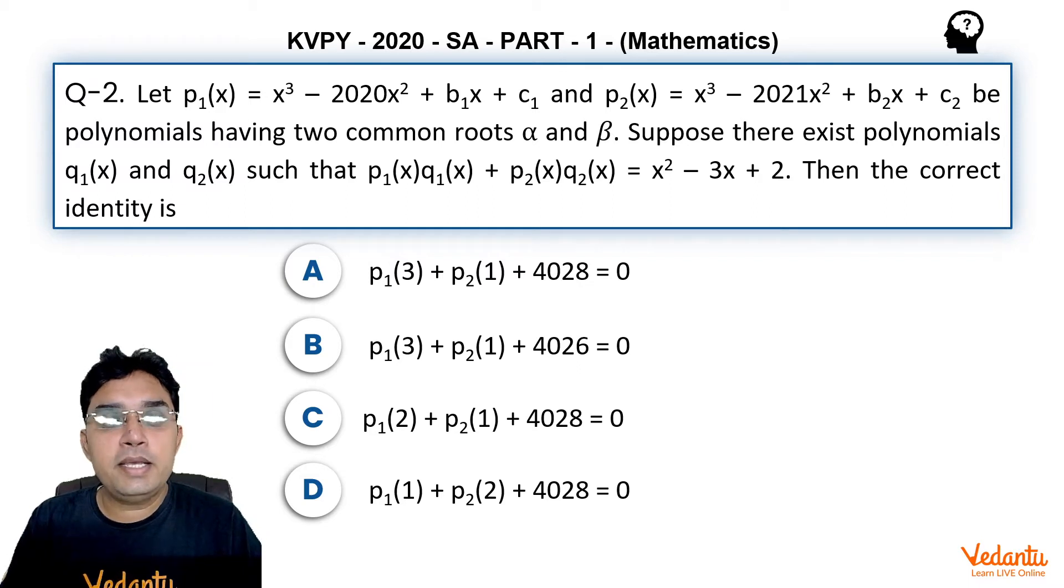Then the correct identity is: option A, p₁(3) + p₂(1) + 4028 = 0; B, p₁(3) + p₂(1) + 4026 = 0; C, p₁(2) + p₂(1) + 4028 = 0; D, p₁(1) + p₂(2) + 4028 = 0.